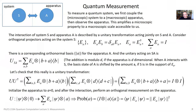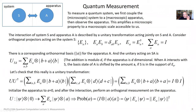We were talking about measurement in the scenario where we have an apparatus and a system. There's a unitary interaction between apparatus and system followed by an orthogonal measurement on the apparatus. And the form of the unitary interaction that I'm going to want to consider between the system and the apparatus is shown here.